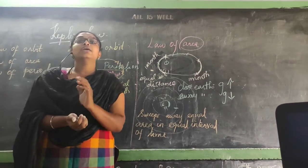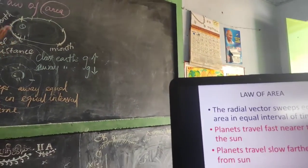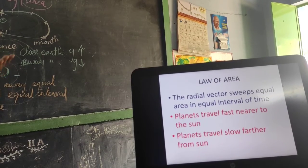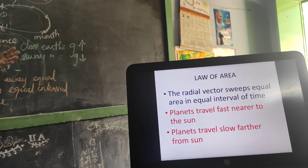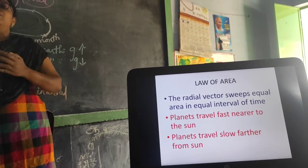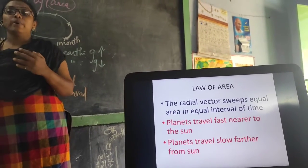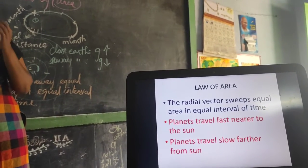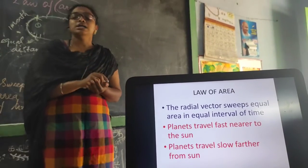So the second law of area: the definition is sweeps away equal area in equal interval of time. The key point is when the planets are close to the sun they move very fast, and when far away from the sun they rotate very slow because of gravity. The value of G is equal to 9.8 meters per second squared.